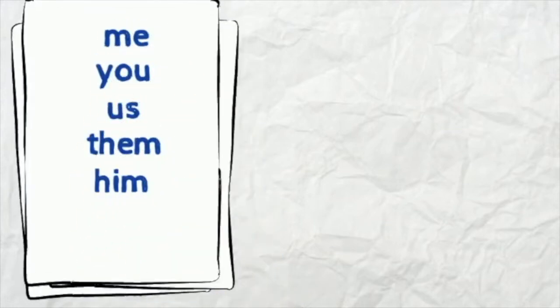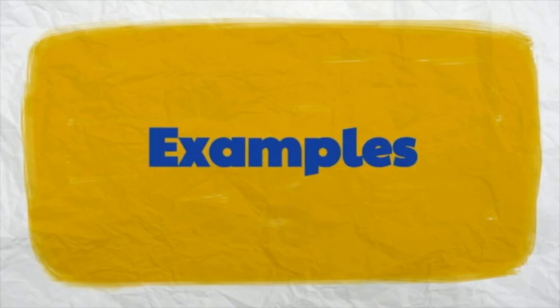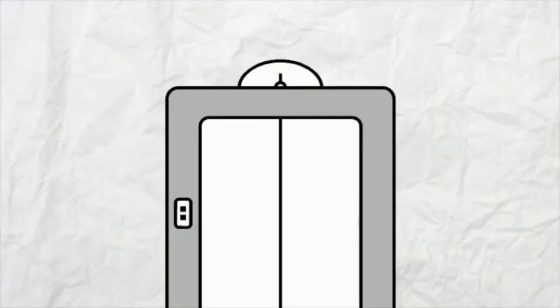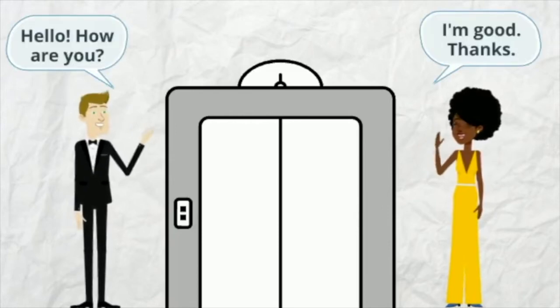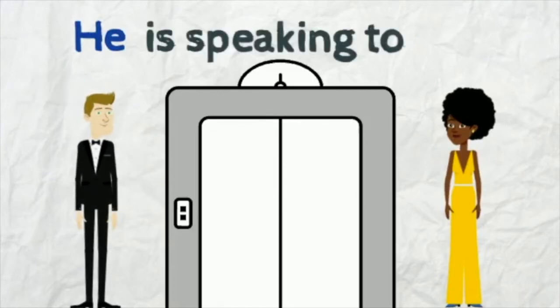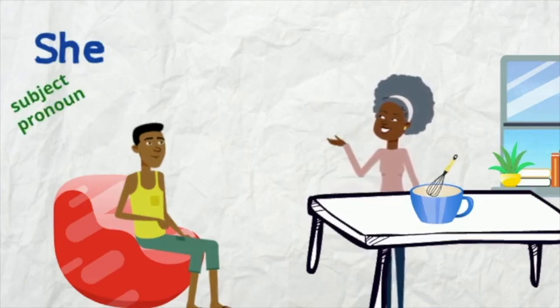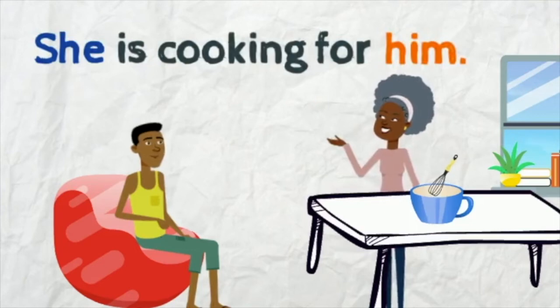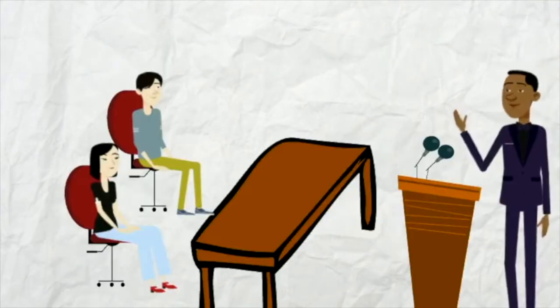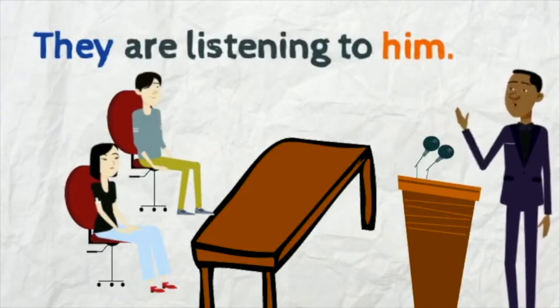Do you remember all the object pronouns? They are: me, you, us, them, him, her, it. Take a look at the following examples. He (subject pronoun) is talking to her (object pronoun). She (subject pronoun) is cooking for him (object pronoun). They (subject pronoun) are listening to him (object pronoun).